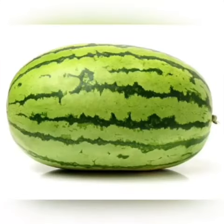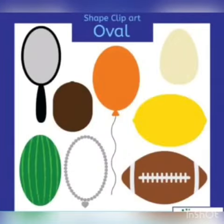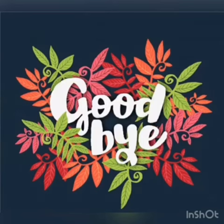Now, what is this? This is a mirror. And what is the shape of this mirror? This mirror is oval in shape. So, we have seen so many oval objects today. Now, I want all of you to find oval-shaped objects in your home. That's all for today. Thank you. Allah Hafiz and goodbye.